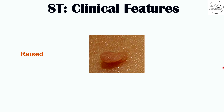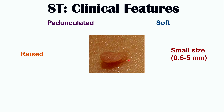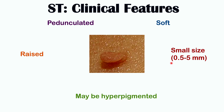Looking at the clinical features of skin tags: a skin tag is a raised skin lesion that is rounded in appearance. It is pedunculated, meaning there is a small stalk that connects the mass of fibrous tissue to the underlying skin. It is soft, and often small in size, ranging from 0.5 to 5 millimeters. Skin tags can increase in size as a patient gets older. The skin tag is often the same color as the underlying skin tone, or it may be hyperpigmented — most often slightly hyperpigmented.